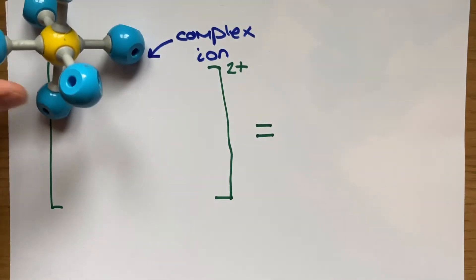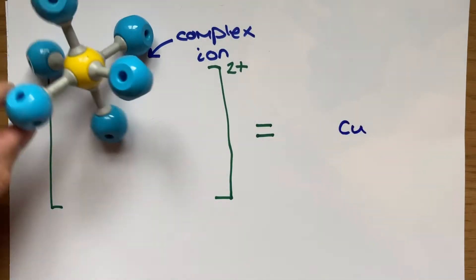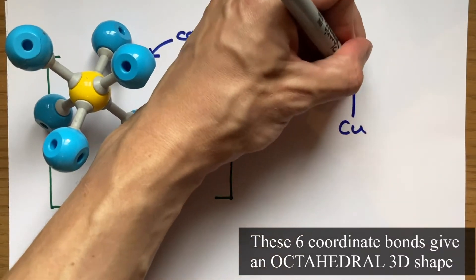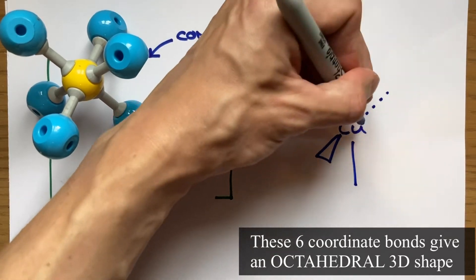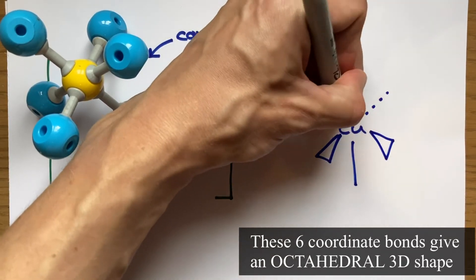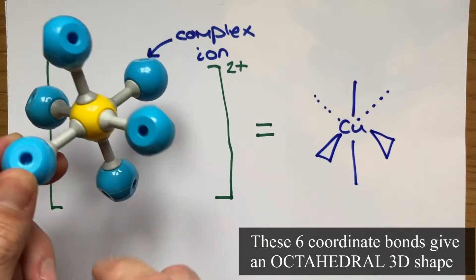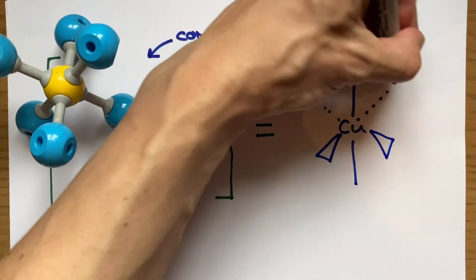Here the 2 plus comes from the balance between the oxidation state of the transition metal ion that's in the complex ion structure and any charges that are on the ligands that have now been bonded to it. So here for instance I've got six H2Os which are neutral and I've got a Cu2 plus transition element ion and so that's 2 plus overall which goes on the outside of the square brackets.